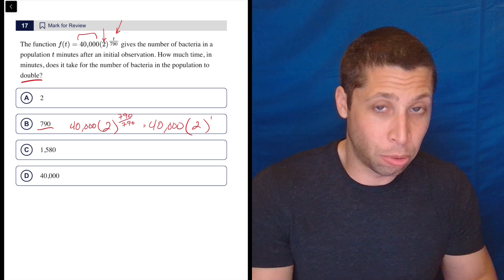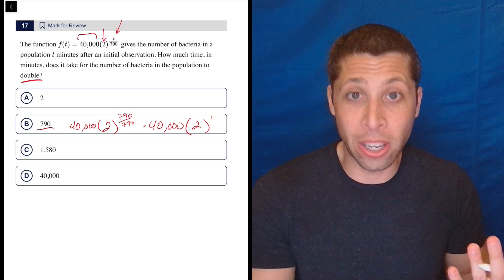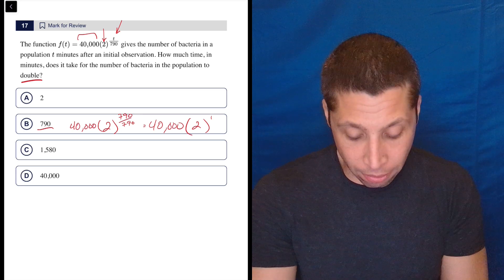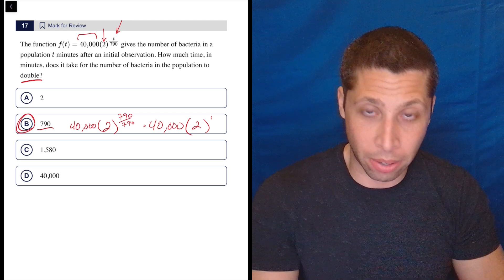And what's 40,000 × 2? 80,000. That just is doubling it, right? So it's doubling every 790 minutes.